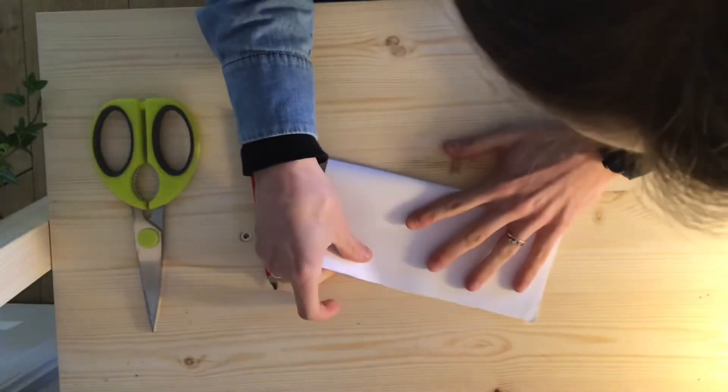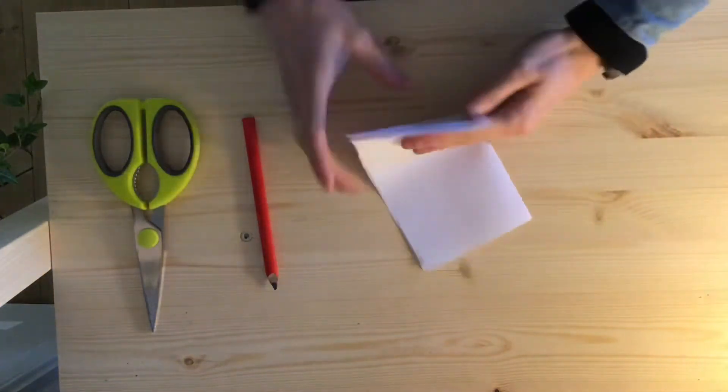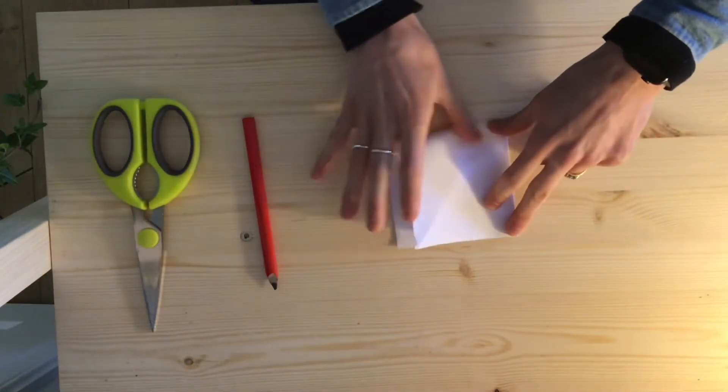Start with a square of paper. You're going to fold it in half one way, make sure the corners kiss, and then fold it in half the other way.